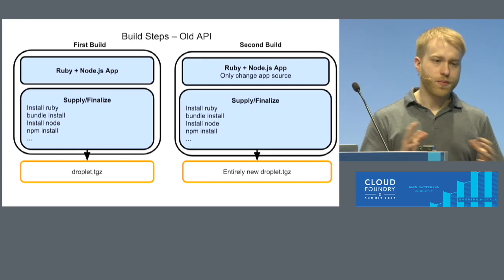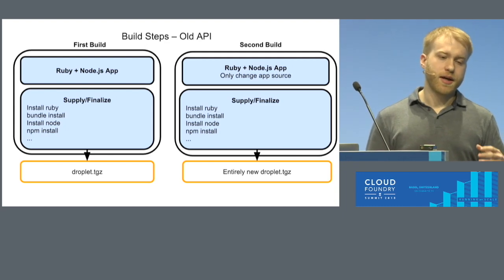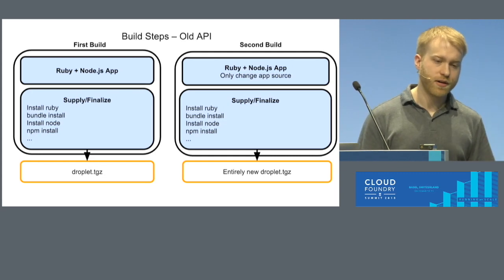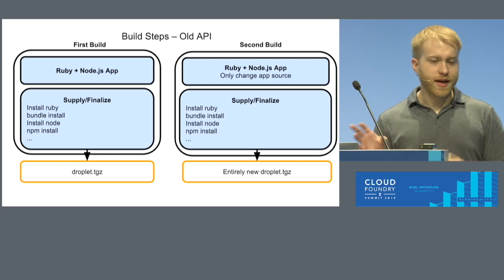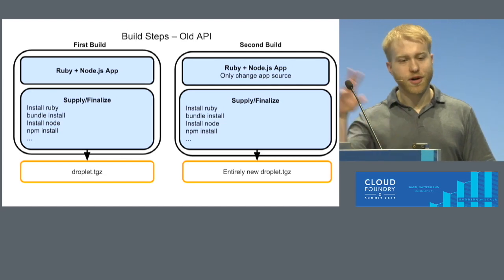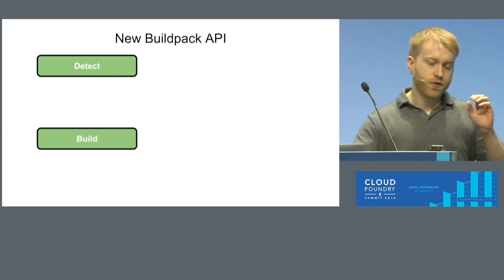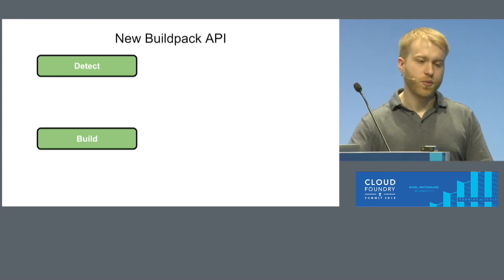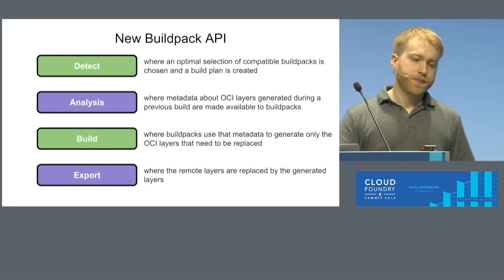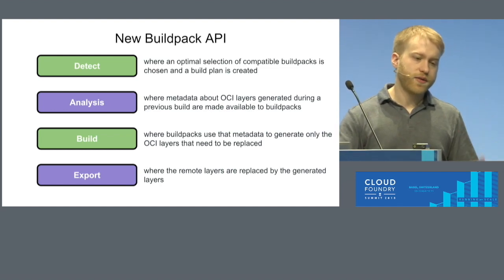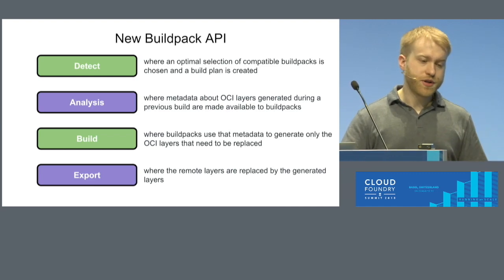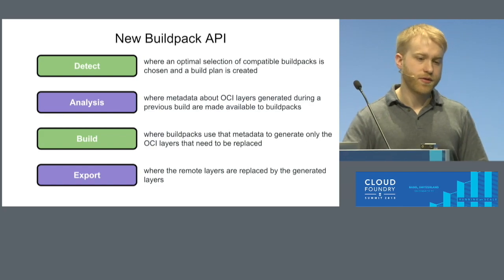So let's compare these two ways of doing things a little more technically. Before, we had just the supply and finalize build step — your application runs supply and finalize, does everything, and generates a droplet. When you want to rebuild again, there's a small cache it has access to, but it's basically going to do all the same things and generate a new droplet and transfer all those same droplet bits out to the edge. In the new model, we take that detect step and that supply and finalize step — we combine supply and finalize into one — and we introduce two more steps that the platform is responsible for, called analysis and export. Detect selects the buildpacks that should run and figures out what dependencies the application needs. Analysis grabs information about the previous image. Build uses that information to determine what layers to rebuild. And export sends those layers up to the registry.